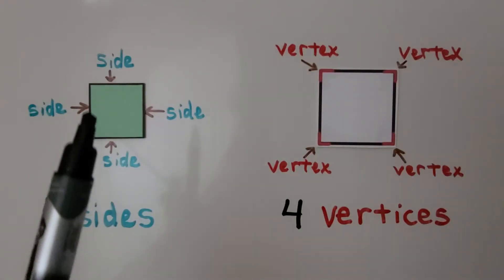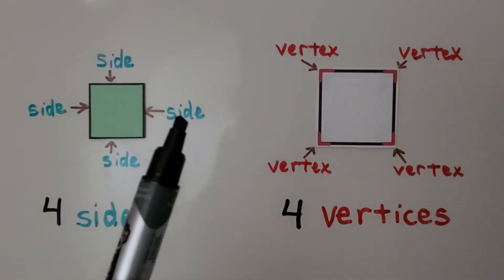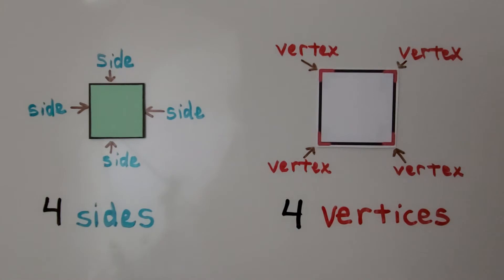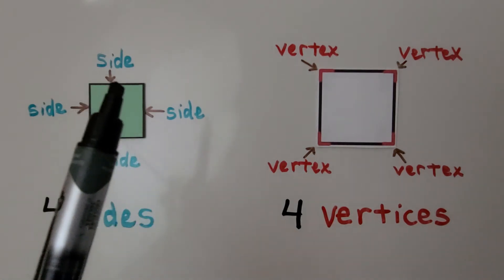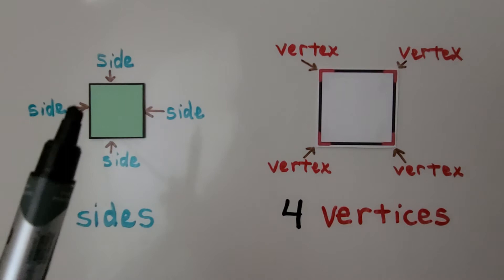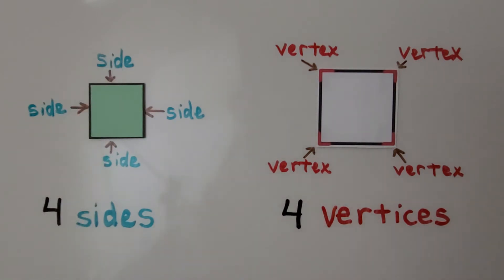A square has four sides. All the sides are the same length. They all match — they're all the same as each other.